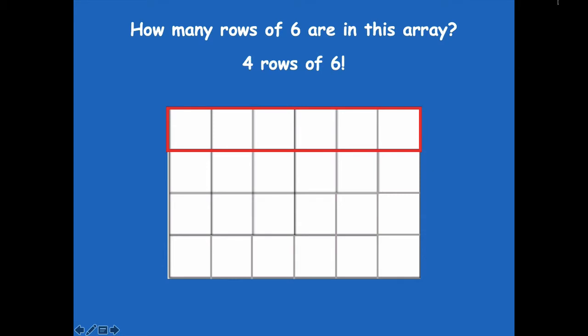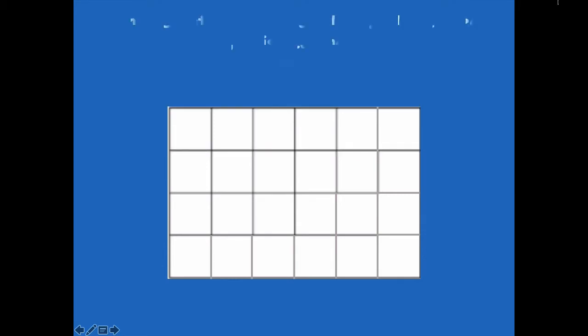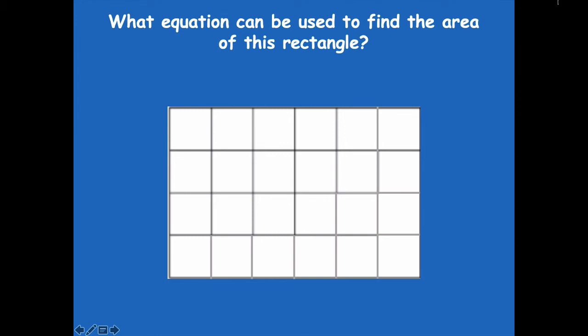Okay, there's four rows of six: one, two, three, four. What equation can be used to find the area of this rectangle? Yeah, multiply those side lengths, friends, remember. So four times six equals 24.